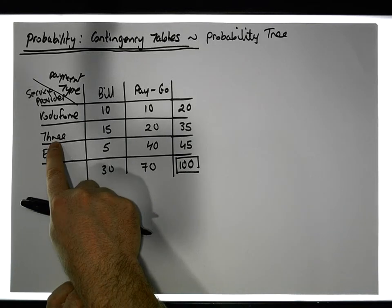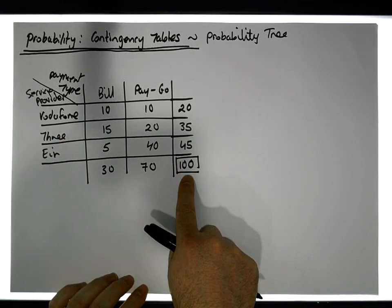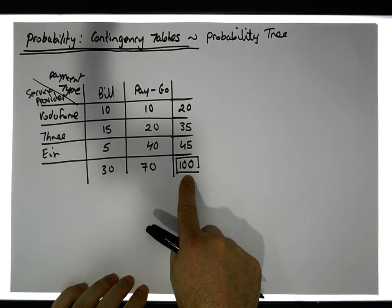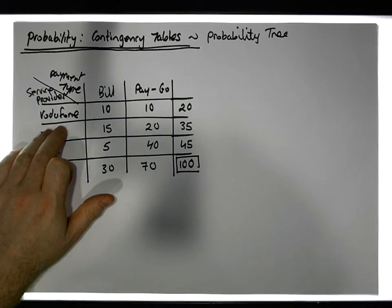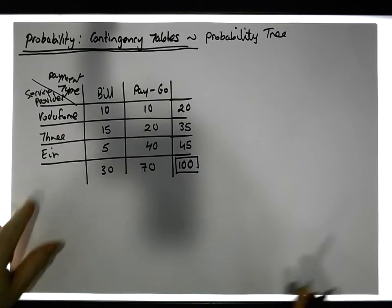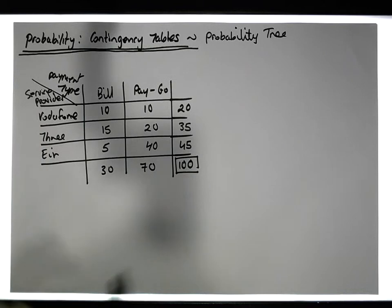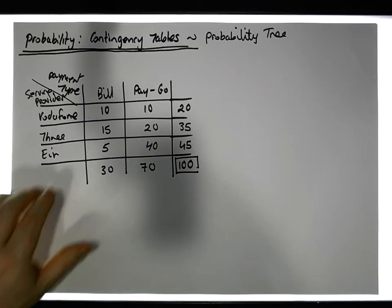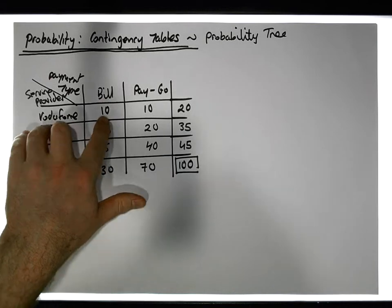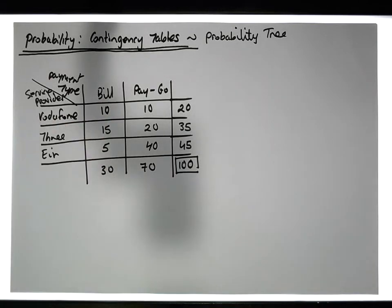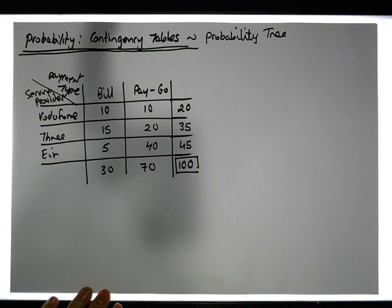You can also calculate simple probabilities like the probability that you're a Three customer — well, there are 35 out of 100. Then we could have compound events, where we ask things like: what's the probability that you're a Vodafone customer or an Eir customer — using the addition rule — or what's the probability that you're a Vodafone customer and a bill pay customer.